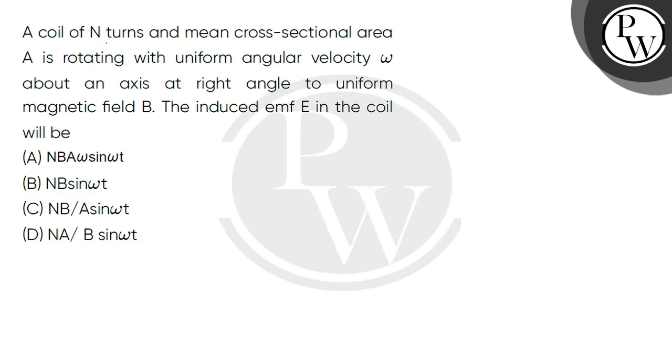Let's read our question. A coil of N turns and mean cross-sectional area A is rotating with uniform angular velocity omega about an axis at right angle to uniform magnetic field B. The induced EMF E in the coil will be: